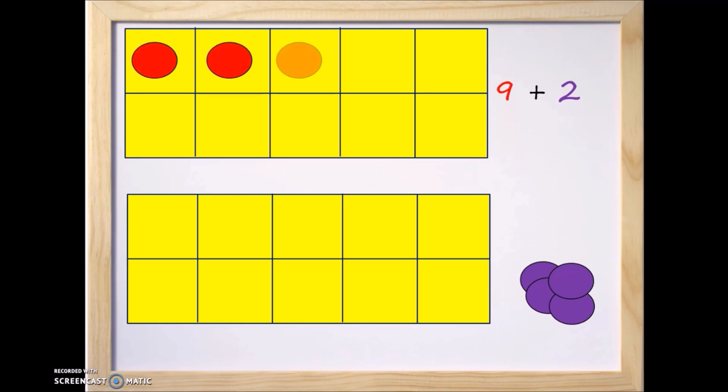1, 2, 3, 4, 5, 6, 7, 8, and 9. Okay, so there's 9 red counters for the number 9.